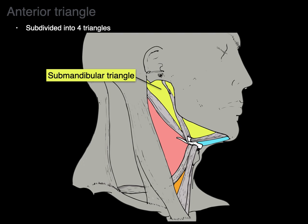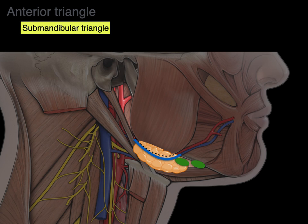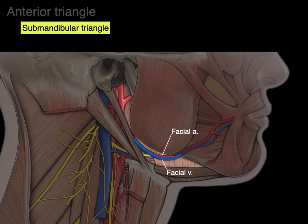The four sub-triangles are: the submandibular triangle, submental triangle, carotid triangle, and muscular triangle. The submandibular triangle is bordered by the anterior belly and the posterior belly of the digastric muscle, as well as the mandible. One of the major contents filling most of the space of the submandibular triangle is the submandibular salivary gland. The facial artery exits deep from the gland, and the facial vein is superficial to the gland. Lymph nodes in this area are called submandibular lymph nodes. On the floor of the submandibular triangle is the mylohyoid muscle, and tucked right in back is the hypoglossal nerve, cranial nerve 12, going to the tongue.